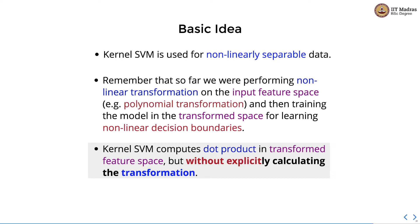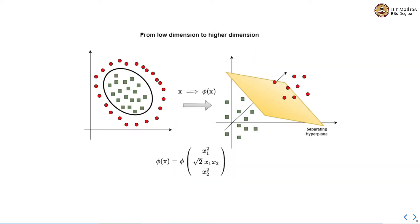SVM computes dot product in the transform feature space without explicitly calculating the transformation, as part of its kernel function. We will see this kernel trick with an example of a polynomial transformation. By performing the transformation to the higher dimensional space, we hope that we will be able to find a linear separating plane between the two classes in the transform space.